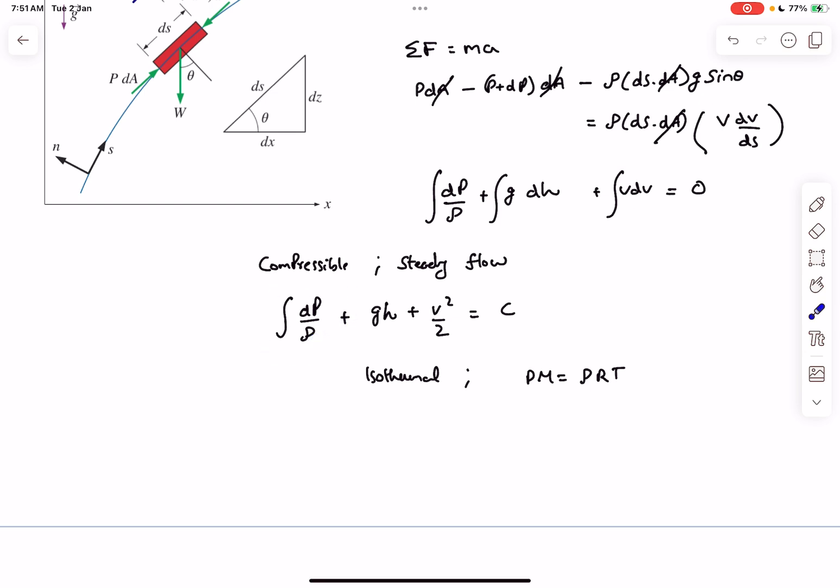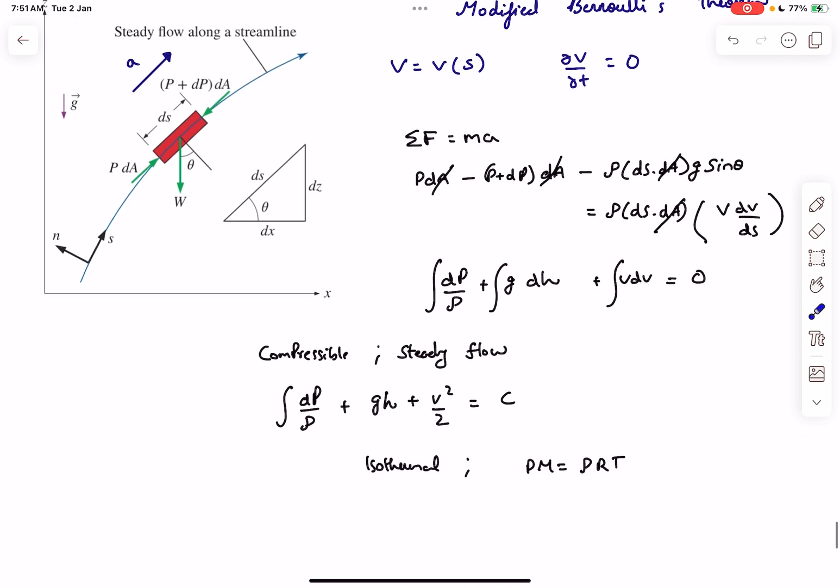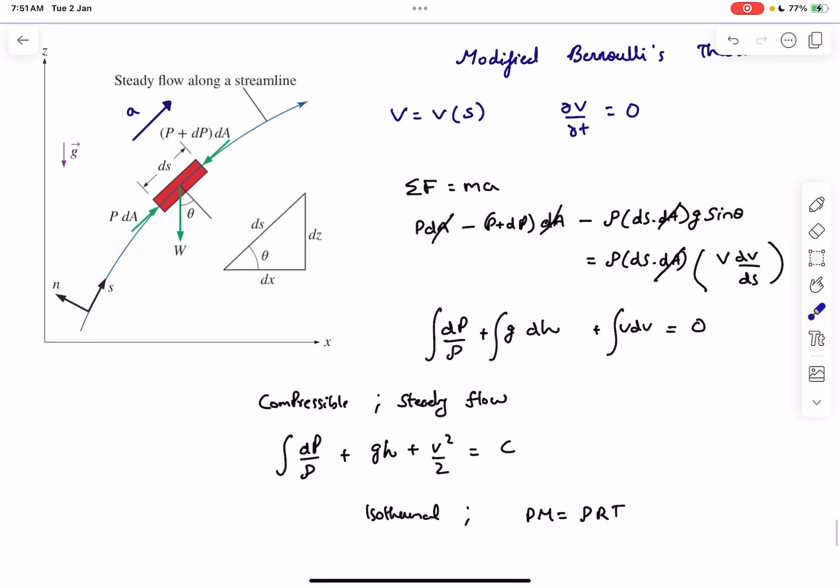If you substitute for ρ as p divided by some constant, this will take some logarithm form. Likewise, you have to solve depending upon the situation given to you. That's how you deal with the compressible flow case. Now let's move on to our problem.